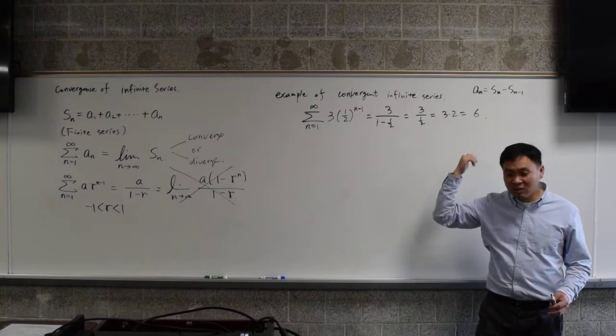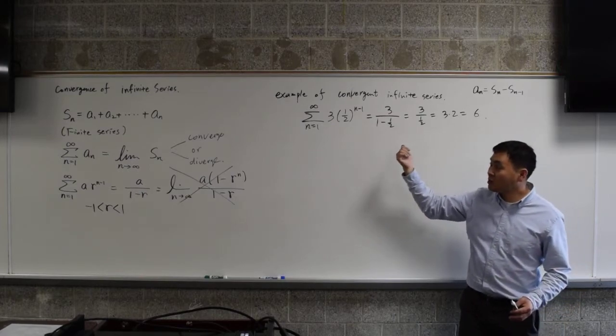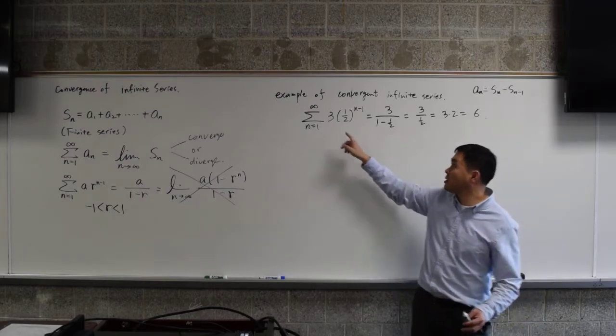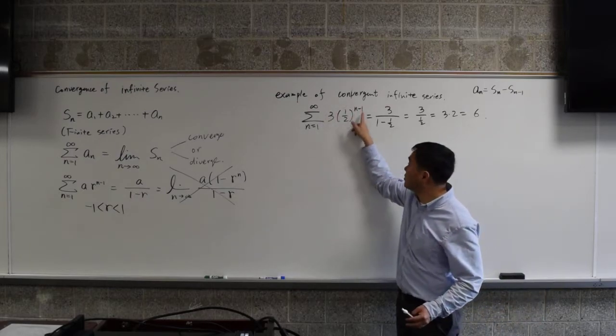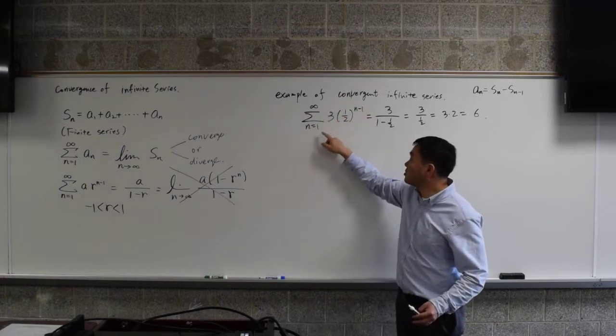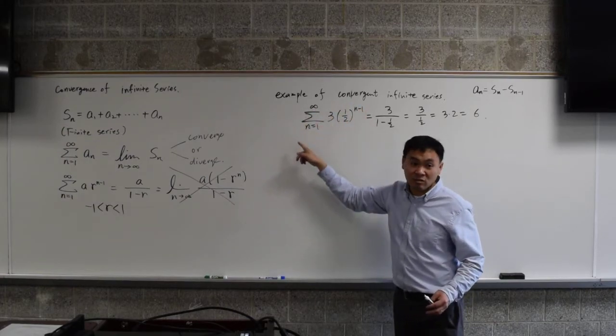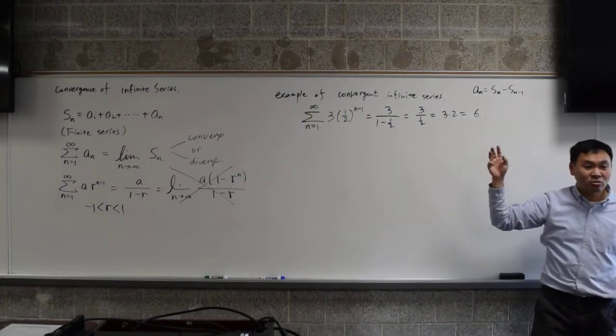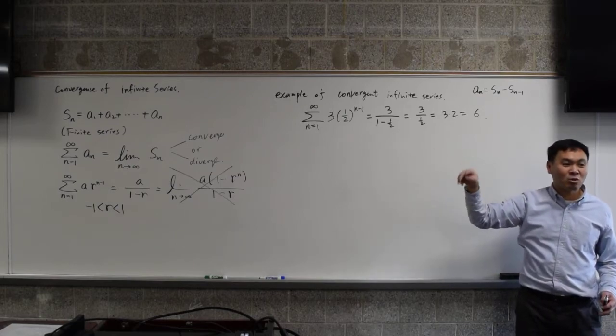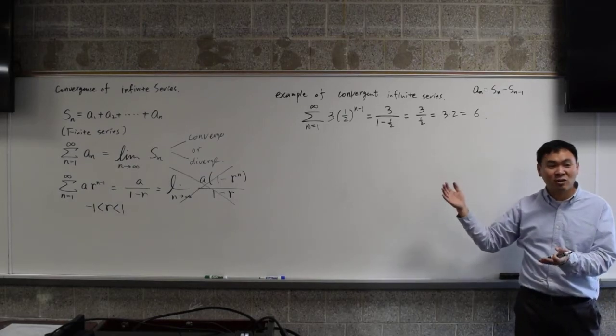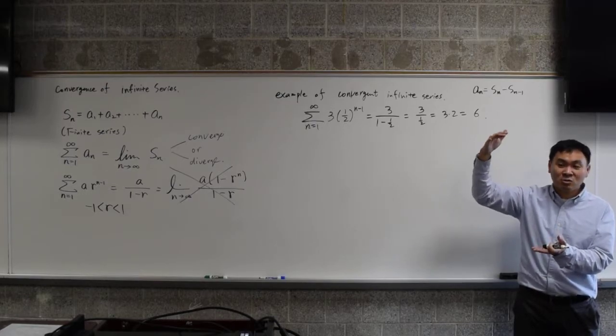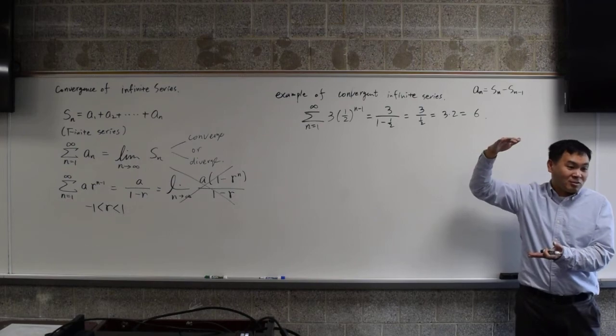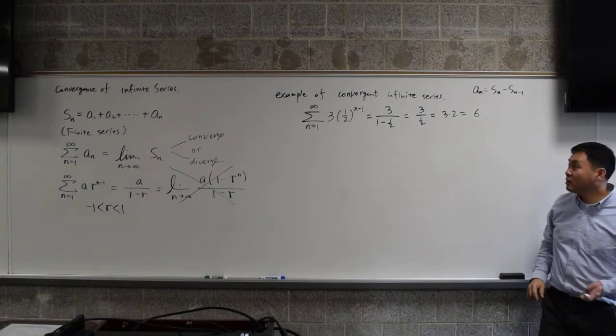And the confusing thing in dealing with some of the sequences is that you have two kinds of limits. You have this limit of the sequence itself, which in this case went to 0. And the limit of the series, the infinite series, in which case it added up to 6. Because you start from 3 and then you add 3 over 2, so it's bigger than 3. You add more and more, so it increases, but it doesn't increase beyond 6. It just stops at 6. That's what happens.